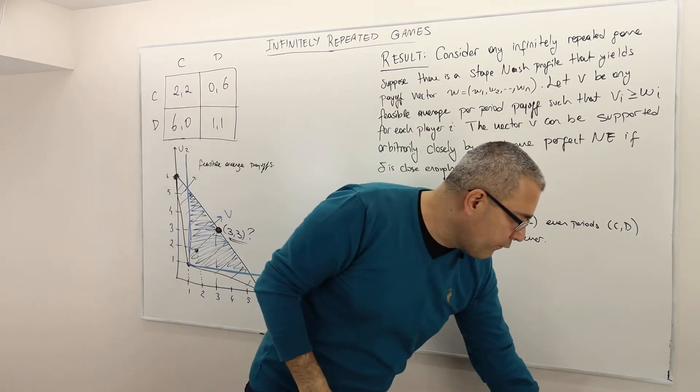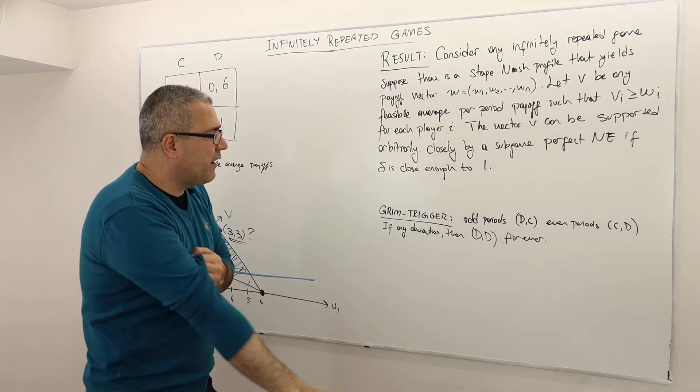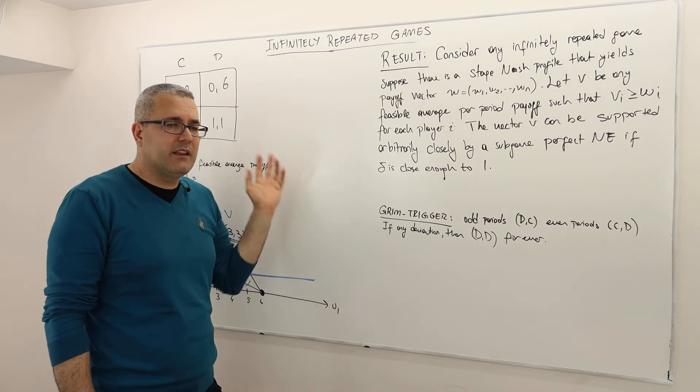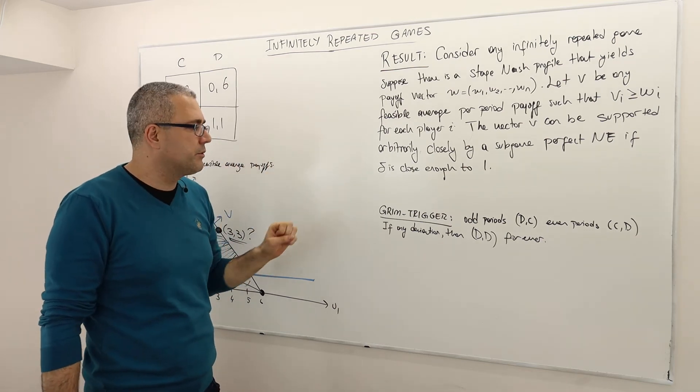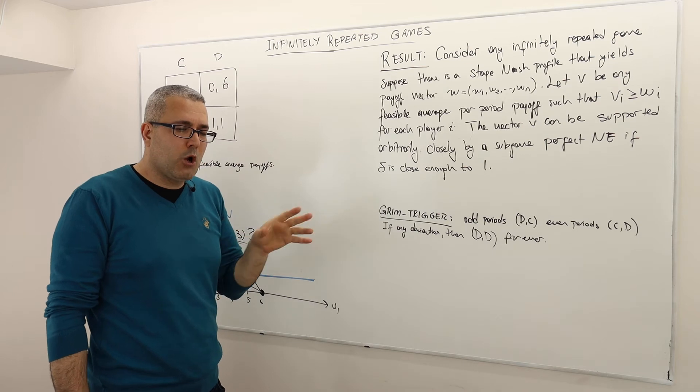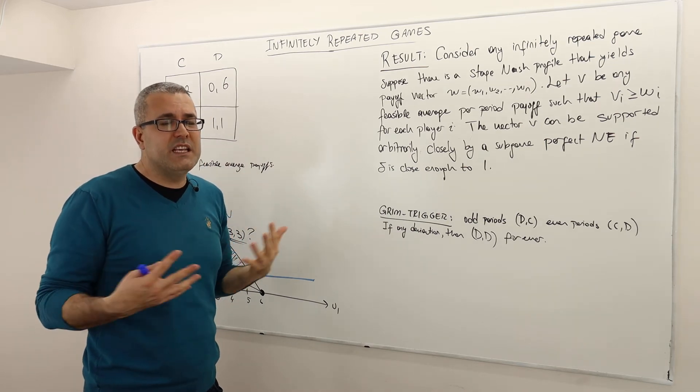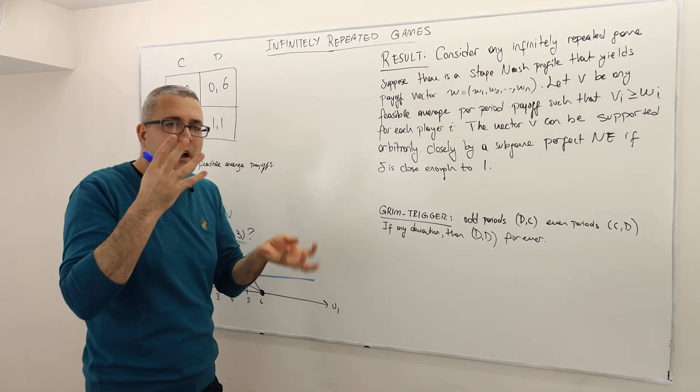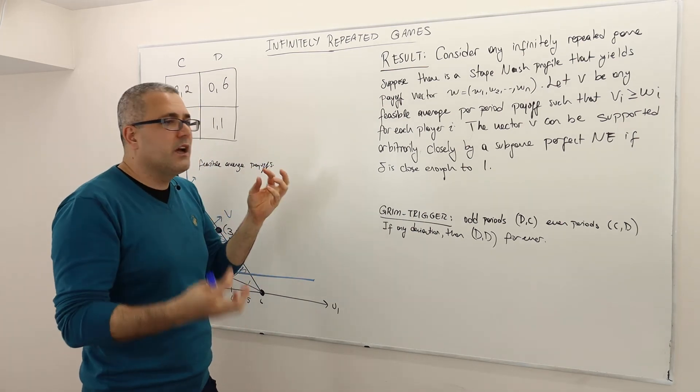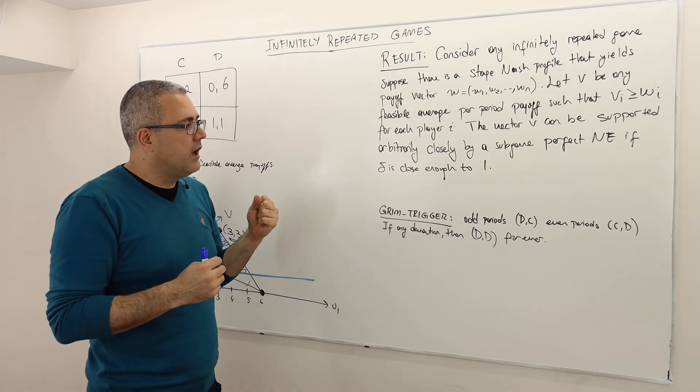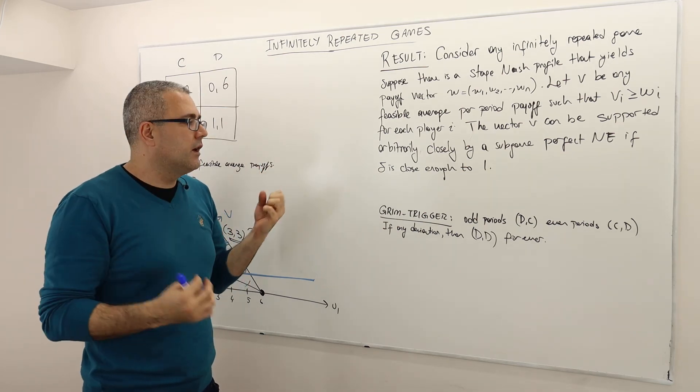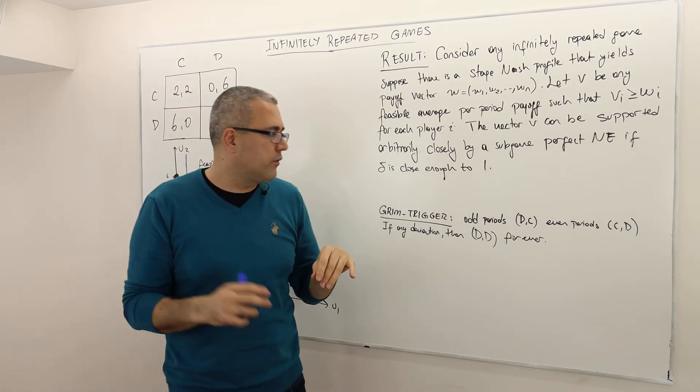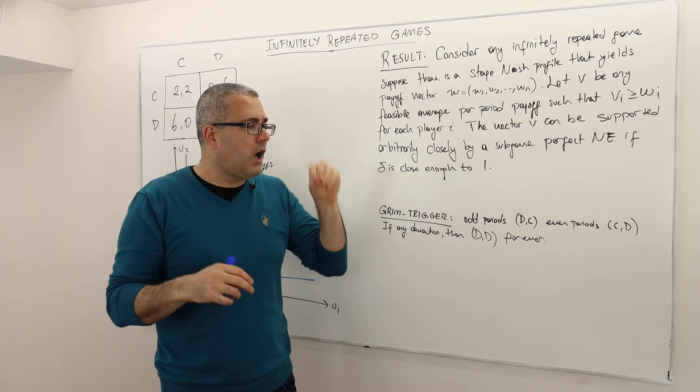Well, to be more formal, let's define the following Grim Trigger strategy. It's going to be slightly more complicated than the previous example because we were trying to show a relatively easier payoff as an SPNE. So this one is a bit more complicated because it requires sort of a combination of two cooperation action profiles. Well, so here's the strategy profile.